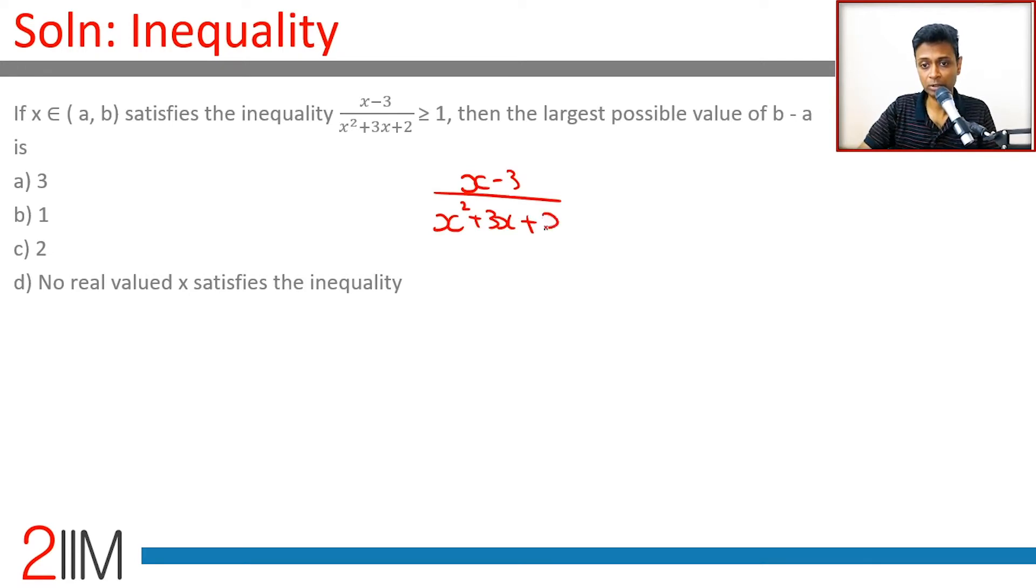Minus 1 greater than or equal to 0. Keeping 0 on one side simplifies life. We know this can be factorized as (x + 1)(x + 2).